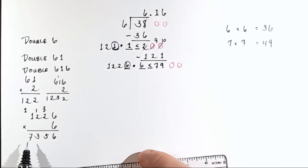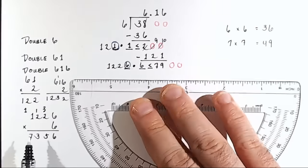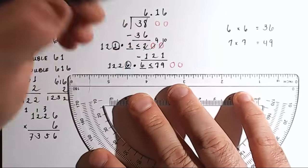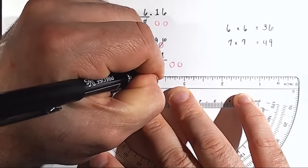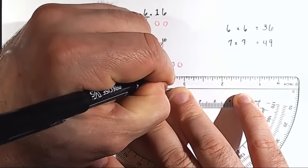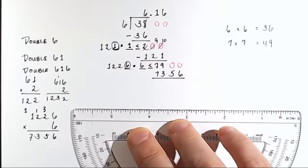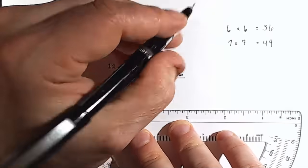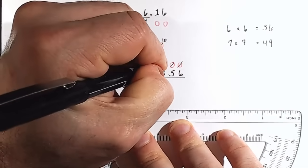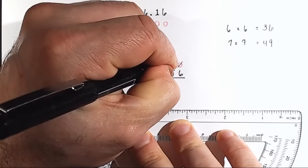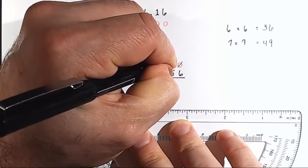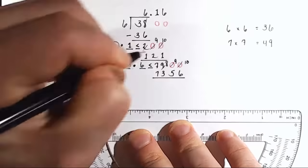But we would take this, the next step in the process would be to take 7, 3, 5, 6, and write it here. 7, 3, 5, 6. Okay? If you wanted to continue this out, for our purposes in math, we don't need to usually do that, but you could.